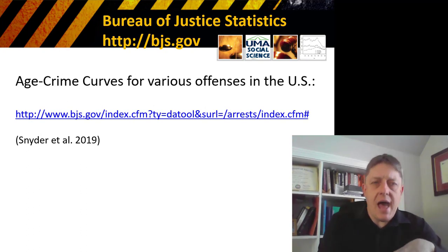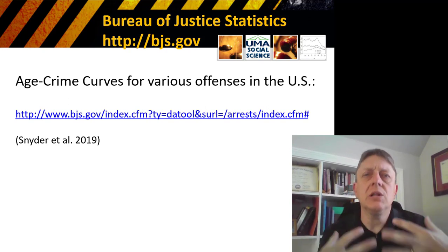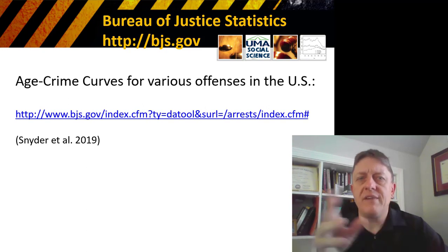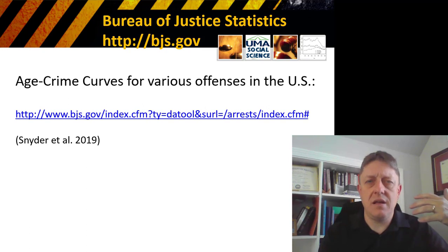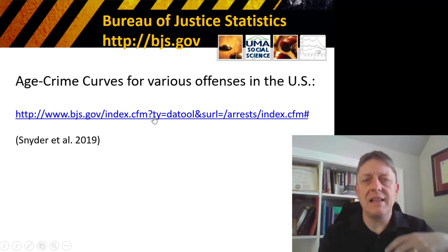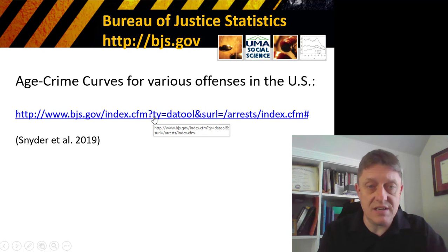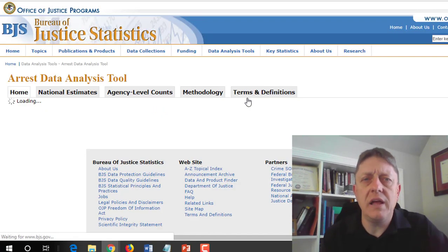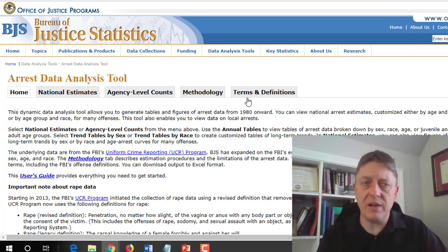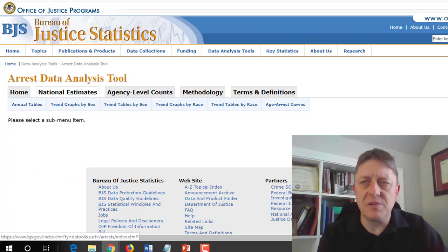If we want to take a look at the statistical basis for this, we can look at government statistics — particularly the Bureau of Justice Statistics, online at bjs.gov. There's a particular publication online, a data tool that allows us to look at the most recently available information on arrest statistics. For this data tool, the most recent patterns available are in 2014. So to look at this, we click on that link, and we're going to select national estimates. We're going to look in particular on the right at age arrest curves.